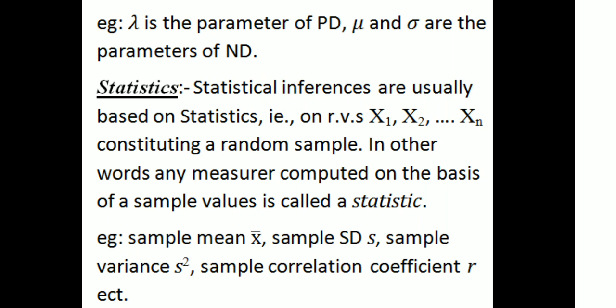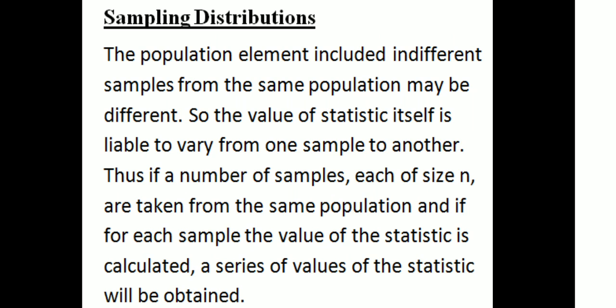Next, about statistic: statistical inferences are usually based on statistics, that is, on random variables x1, x2, etc., xn, which constitute a random sample. In other words, any measure computed on the basis of a sample value is called a statistic. Examples: sample mean x-bar, sample standard deviation s, sample variance s-square, sample correlation coefficient r, etc.